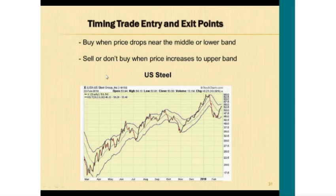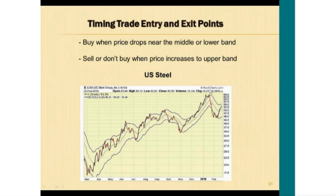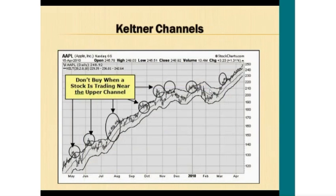We want to buy when the stock retraces toward the middle or lower channel. Here's a price chart for U.S. Steel — we can see when the stock gets overbought it usually retraces, and when it gets oversold near the lower channel there's usually a rally that follows. I've circled the timeframes when the stock is getting overbought with price trading above the upper channel, and in almost every case once it gets overbought it retraces back toward the middle or lower channel. This is a very useful tool for helping us enter and exit trades.